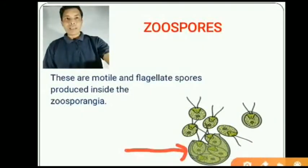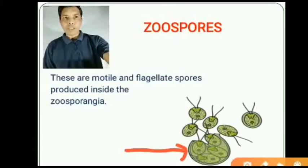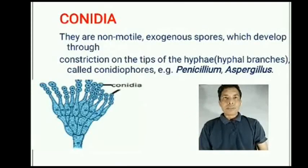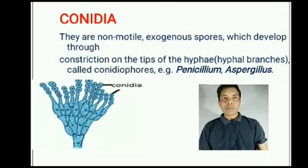For example, Chlamydomonas, a green alga — this sac-like structure is the zoosporangium, and these are the flagellated zoospores inside it. The other type of spore is conidia. They are non-motile, exogenous spores which develop through constriction on the tips of hyphae branches called conidiophores.